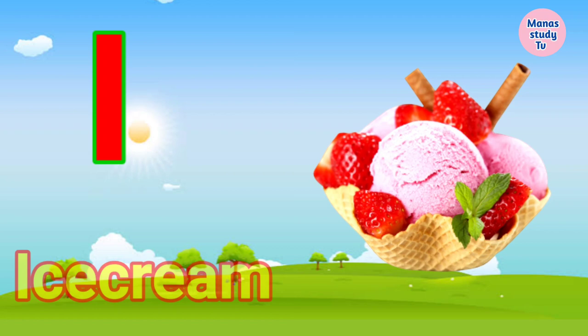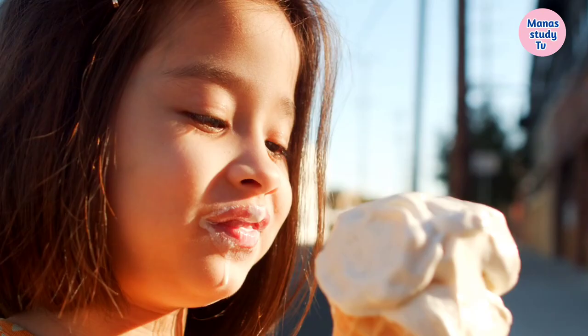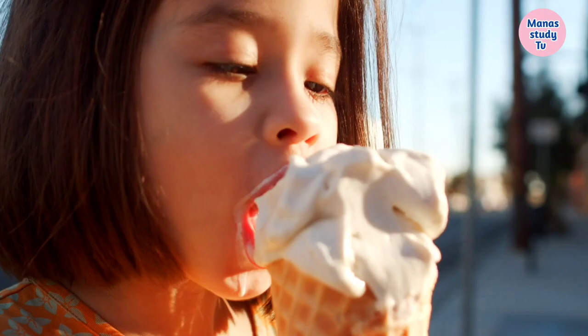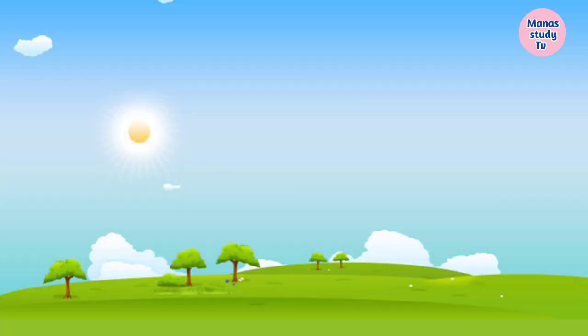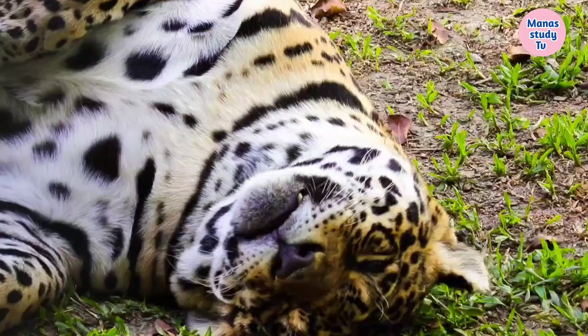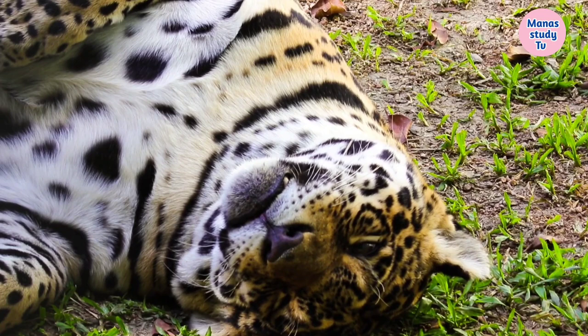I. I for Ice Cream. Ice Cream means Ice Cream. J. J for Jaguar. Jaguar means Tendua.